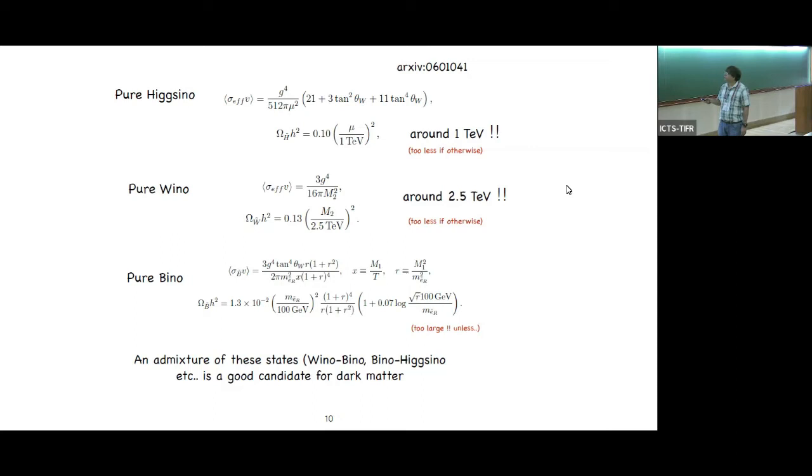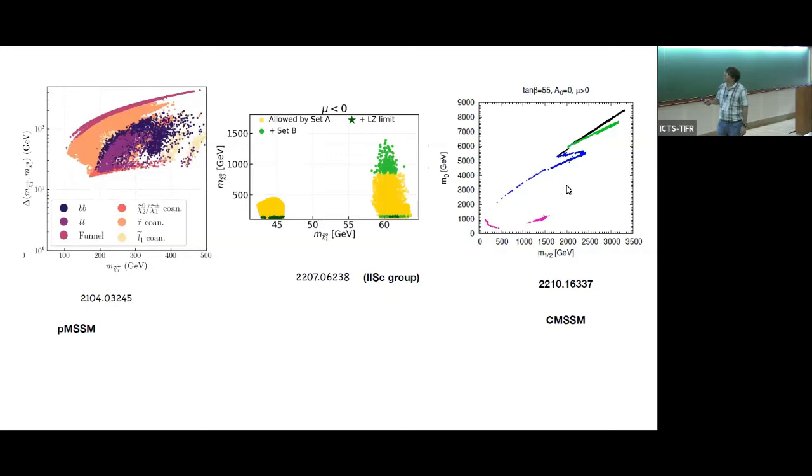If you have dark matter with a pure Higgsino or pure Wino, the limits are pretty strong, about one TeV or so. And if you have a pure Bino, it's pretty large, unless you have some admixture of Wino-Bino, Wino-Higgsino, etc. for dark matter. In summary, typically you seem to be having all the limits, all the constraints coming from Higgs, direct searches like LHC, dark matter, flavor, everything seems to be pushing the scale of supersymmetry pretty high.